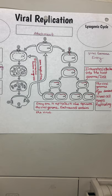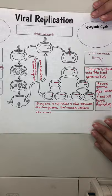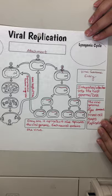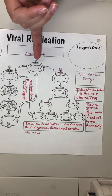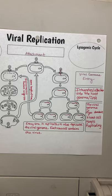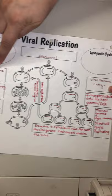If y'all would grab out your viral graphic organizer — we talked about the lytic and the lysogenic cycles. We noticed that the first and second steps of each of these replication cycles are going to be the same. The virus has to attach; in this case it's a bacteriophage, so it's going to be attaching to the bacteria. Then we have to insert the viral genome.